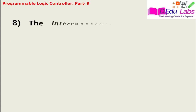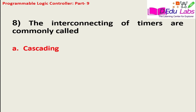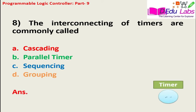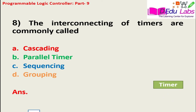Question number eight: the interconnecting of timers is commonly called — option A: cascading, option B: parallel timer, option C: sequencing, option D: grouping. The answer is option A — cascading. That means two timers can be connected in series to develop cascading.